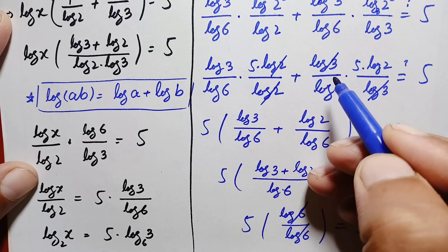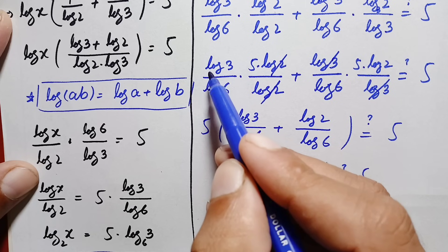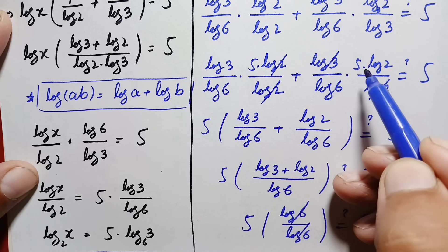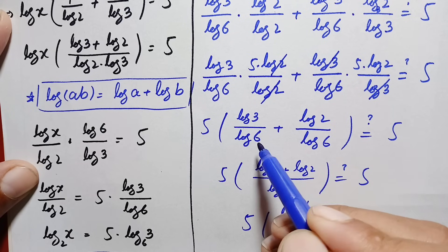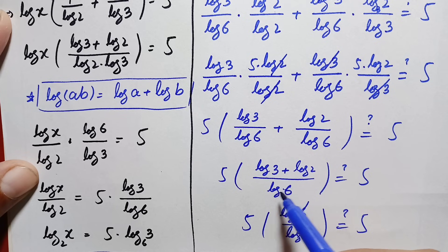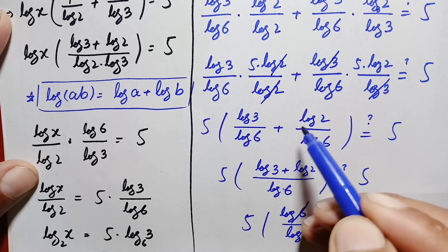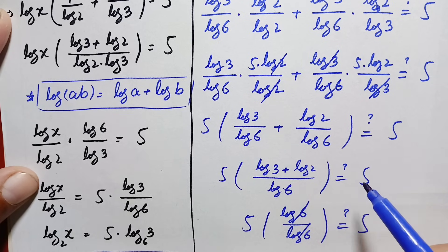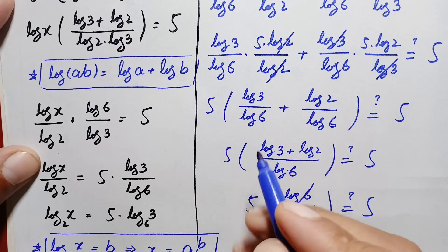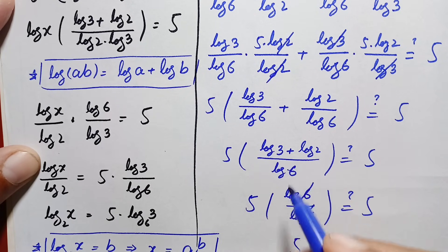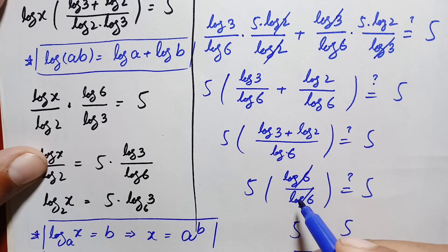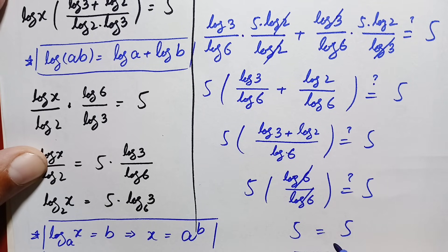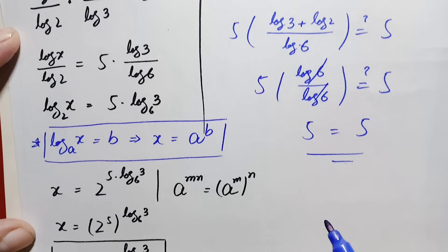Taking 5 as a common factor, this becomes: 5 times (log 3 / log 6 plus log 2 / log 6) equals 5. Since the denominator is the same, combining gives: 5 times (log 3 + log 2) / log 6 equals 5. Using log(3 times 2) = log 6 in the numerator, log 6 over log 6 cancels to 1, so 5 times 1 equals 5. Therefore 5 equals 5.